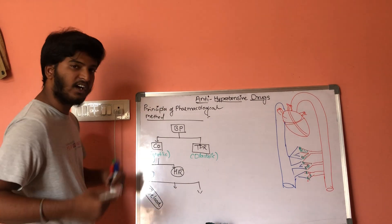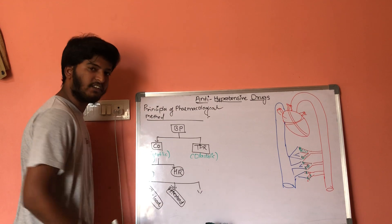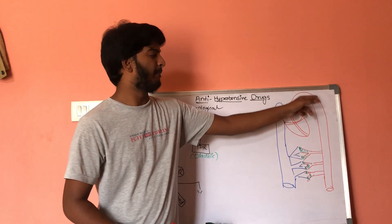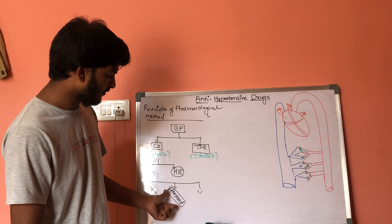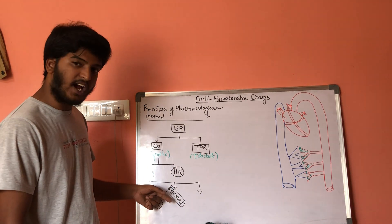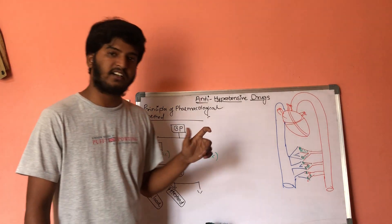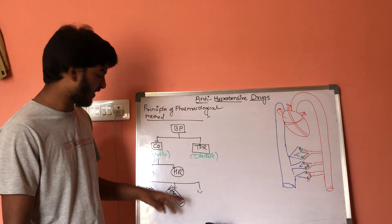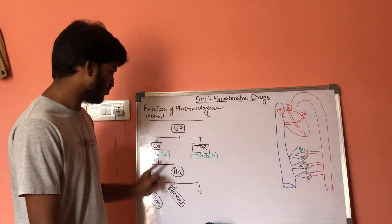The second factor on which stroke volume depends is afterload — the resistance offered by blood vessels for pumping of blood. Drugs which decrease afterload reduce resistance, causing blood vessels to dilate, decreasing blood pressure. If afterload decreases, stroke volume decreases, cardiac output decreases, and blood pressure decreases.